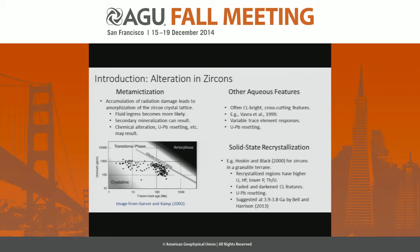Between completely amorphous and nicely crystalline zircon lattice there is a large transitional region where you can get increasing amounts of radiation damage and various chemical effects, possibly with fluid ingress. Various features have been identified in altered zircon populations: aqueous features, cross-cutting features in cathodoluminescence images crossing original magmatic zonation, variable trace element responses, uranium-lead resetting, and solid-state recrystallization.